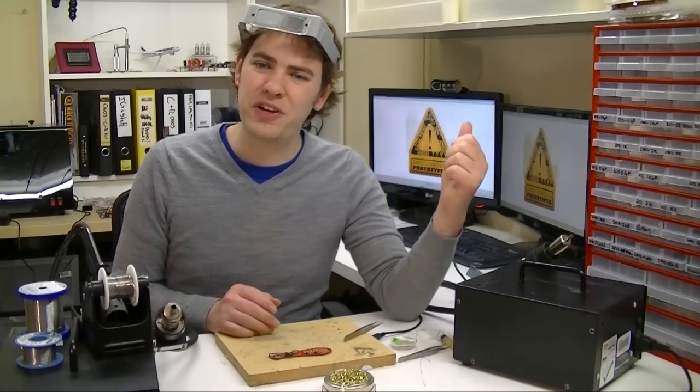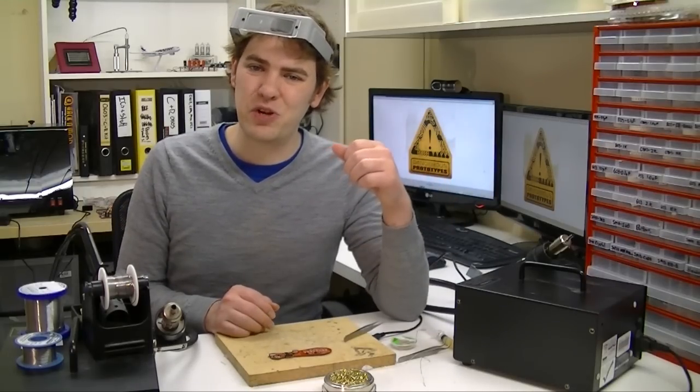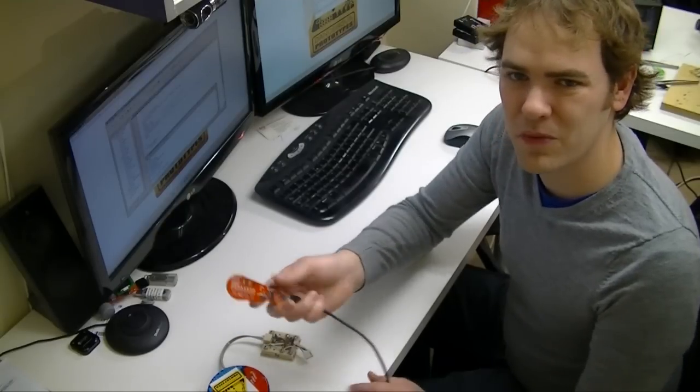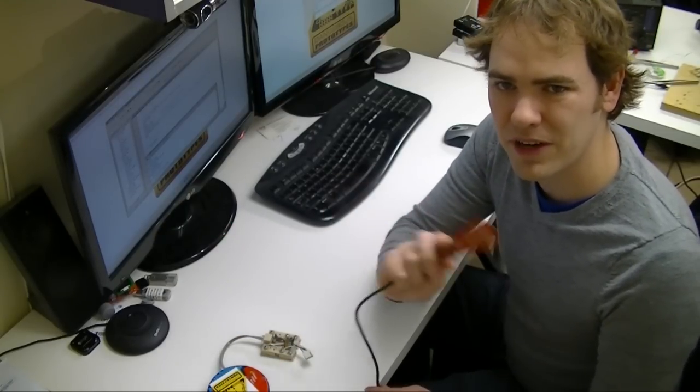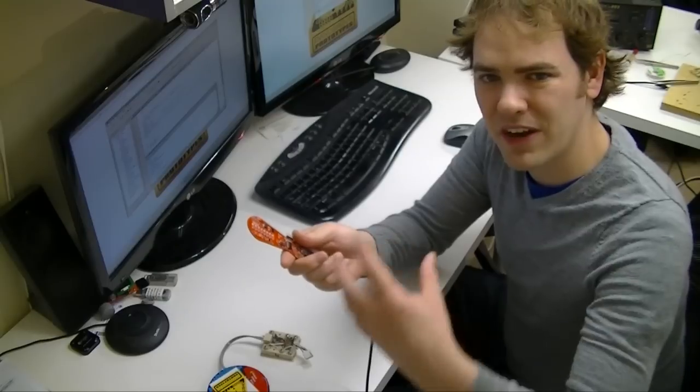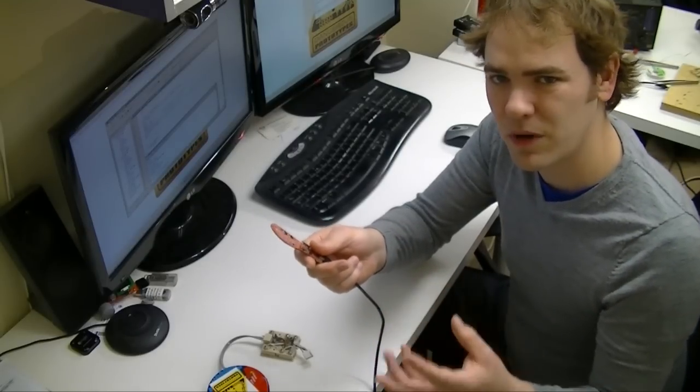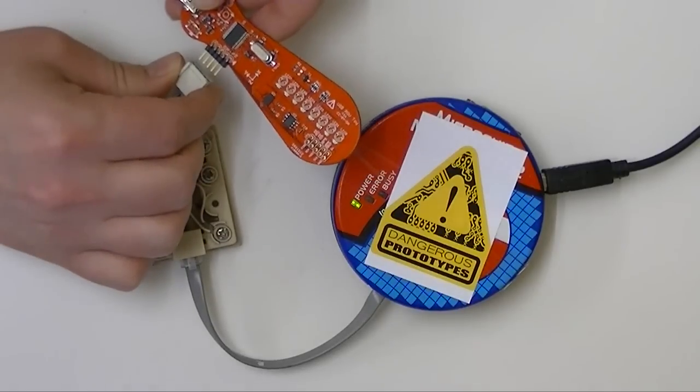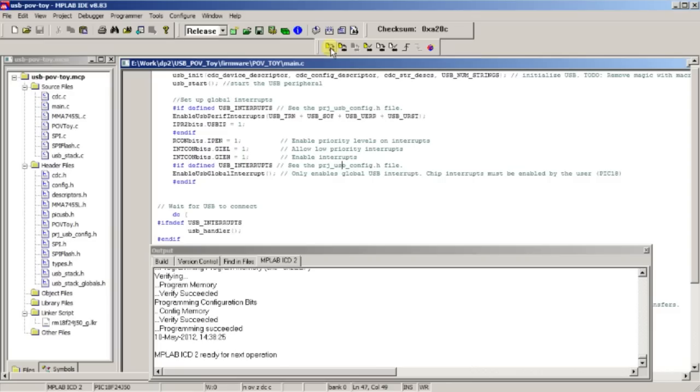So we're going to come over to the computer and try a few of the options in the firmware. Before we program the new firmware, here's what it looks like without the calibration data. Basically, it fires kind of sporadically. It doesn't work very well. So I'll hook it up to the programmer and then we'll program the POV toy.